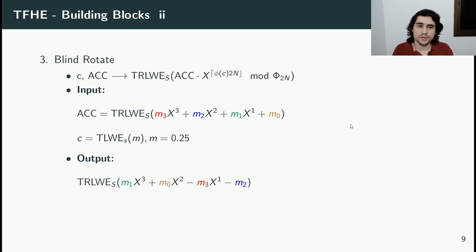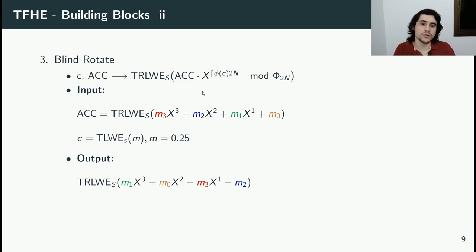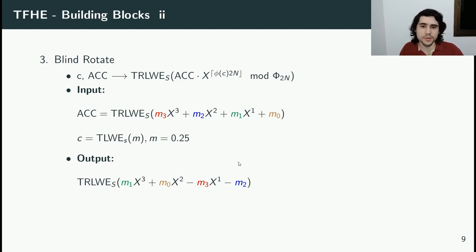The third building block in TFHE is the blind rotate. It receives two inputs: ACC, a polynomial sample, and C, a scalar sample. It rotates ACC based on the phase of C. In this example, N equals 4 and the phase of C is 0.25, so it multiplies ACC by x to the power of 2, rotating two positions to the left. The monomials rotated past the beginning become negative due to this multiplication occurring modulo the 2N-th cyclotomic polynomial — a negacyclic property.